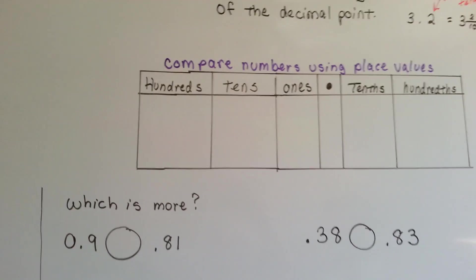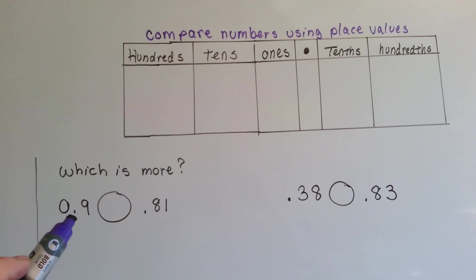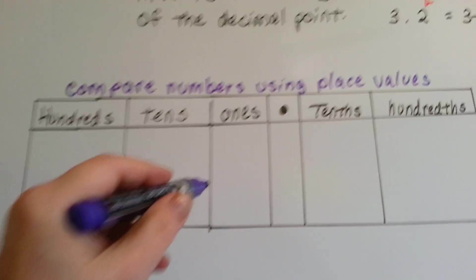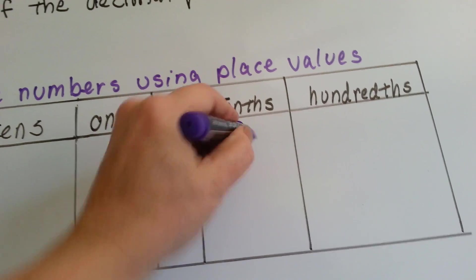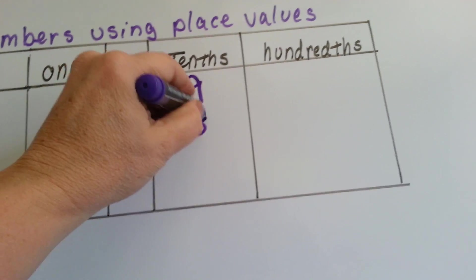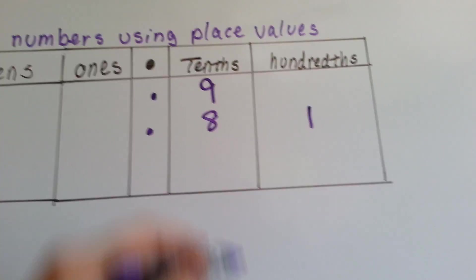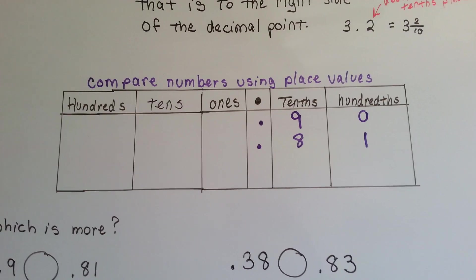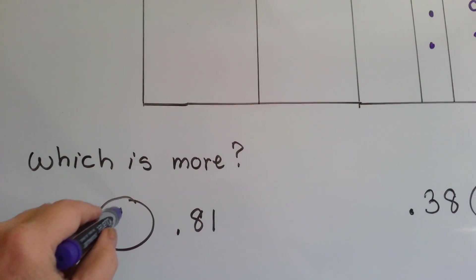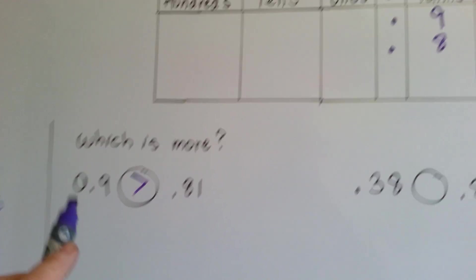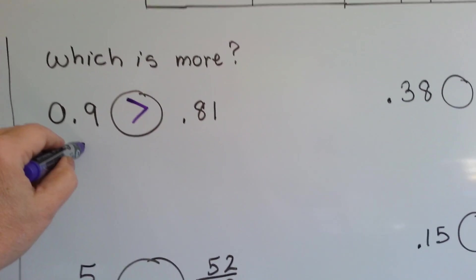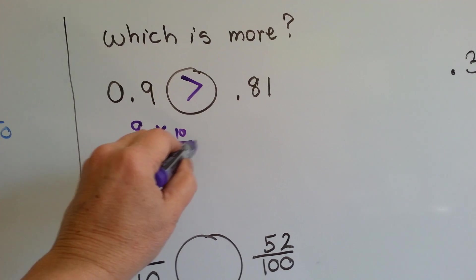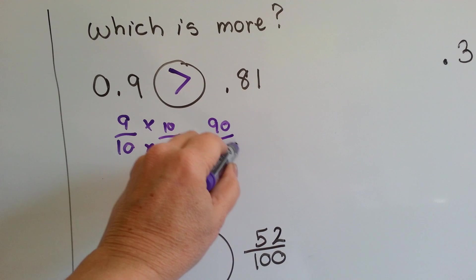Alright, we can keep our place value chart in mind as we do these. Which is more — nine-tenths or eighty-one-hundredths? If we had nine-tenths it would look like that, and eighty-one-hundredths would be like that. We could put an invisible zero here. So which one's bigger by looking at the place values — ninety or eighty-one? If we give them the same denominator and multiply nine-tenths by ten for numerator and denominator, we can see that we have ninety one-hundredths. Ninety is bigger than eighty-one.